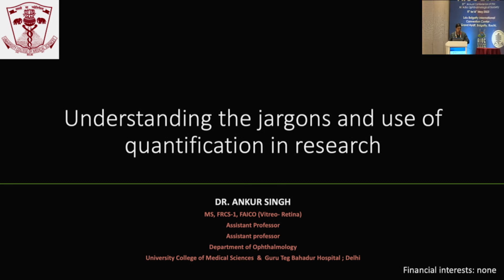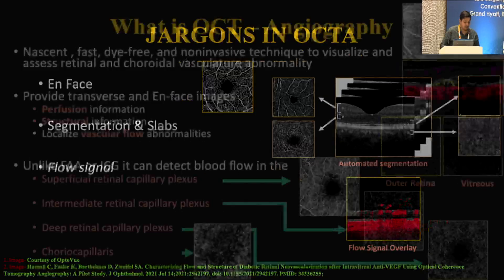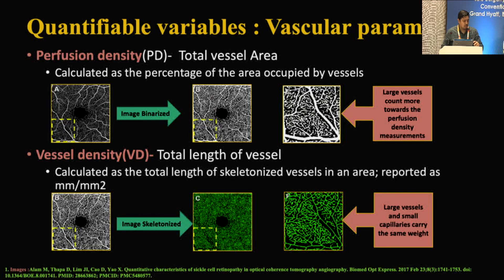The last talk covers quantitative parameters in OCTA and how OCTA is used in research. En-face OCTA is the 2D representation of 3D volumetric data provided by OCT, taken at a particular segmentation slab. Flow signals represent the vascularity of the retina or choroid, overlaid on structural OCT. OCTA has quantifiable parameters — one of which is perfusion density, also known as total vascular area. OCTA images are processed and converted to binarized (black and white) images — white pixels represent vessels and their count gives total vascular area.